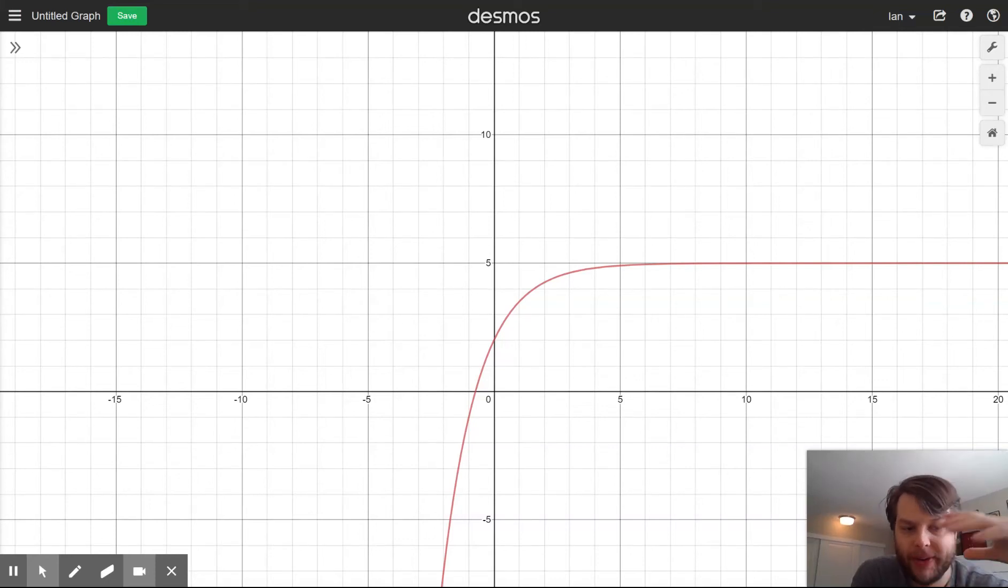So the other thing a lot of people were asking about is if you just have a graph, how do you find the equation for it? And I want you to think of everything as being relative to the asymptote.